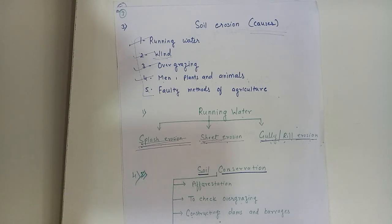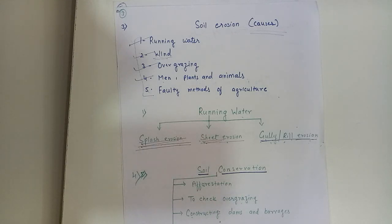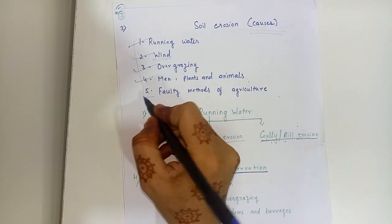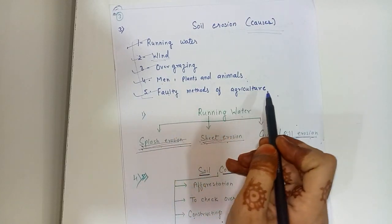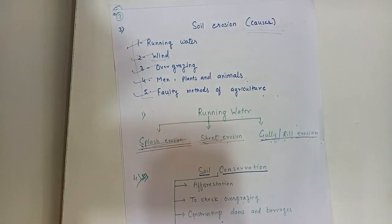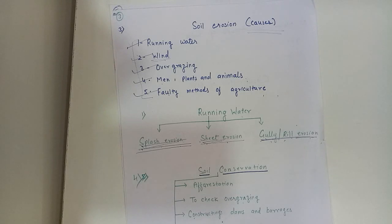Plants and animals are also responsible for soil erosion. Because of overgrazing, soil erosion is possible, and plants are also responsible for that. This is a very important cause of soil erosion. The fifth point is faulty methods of agriculture — that means we are not doing agriculture properly; our methods are wrong.